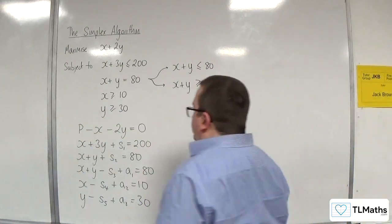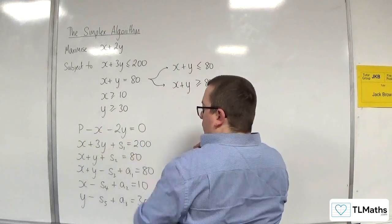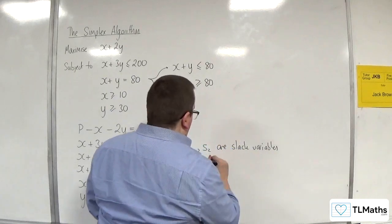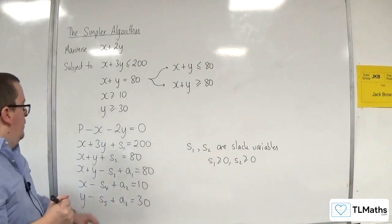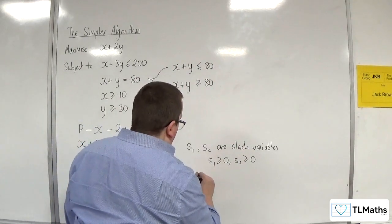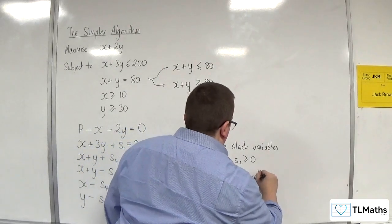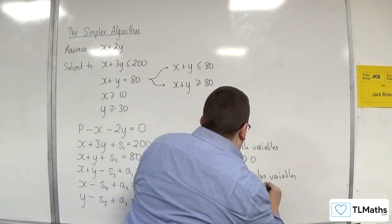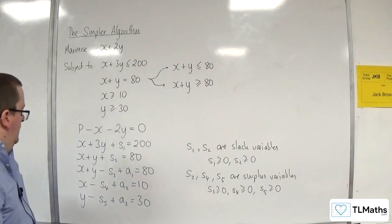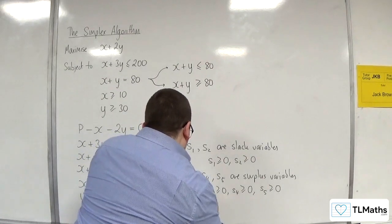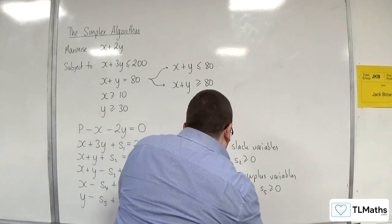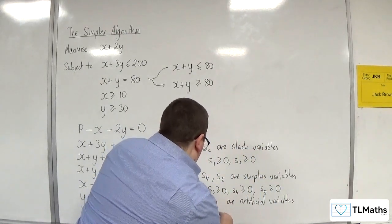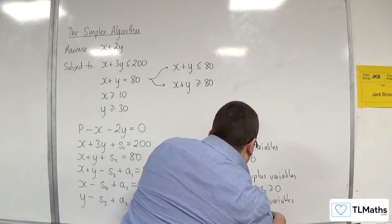Now we need to define our variables. s1 and s2 are slack variables, both greater than or equal to 0. s3, s4, and s5 are surplus variables, each greater than or equal to 0. And then we have artificial variables a1, a2, a3, where a1, a2, and a3 are each greater than or equal to 0.